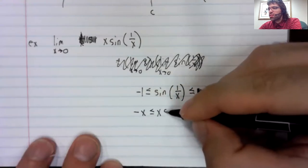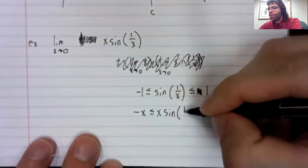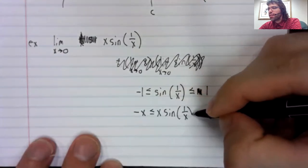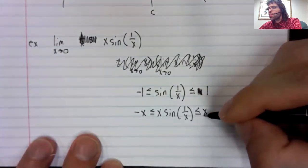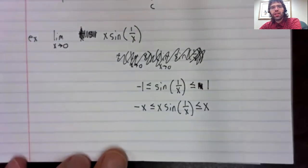X times the sine of 1 over X is stuck between negative X and X.